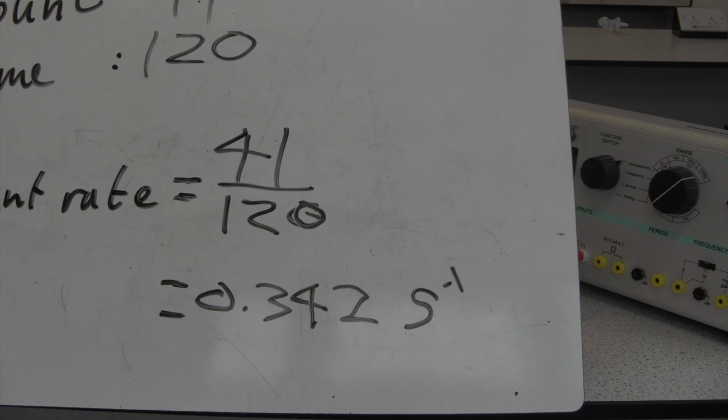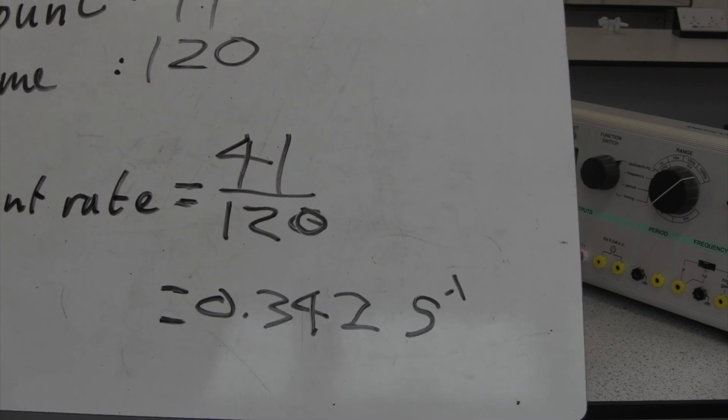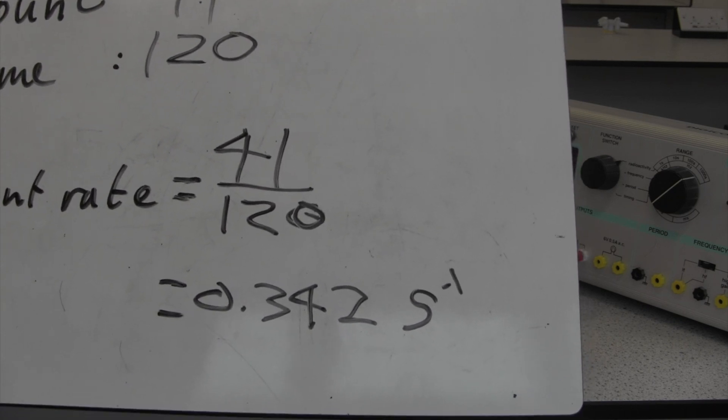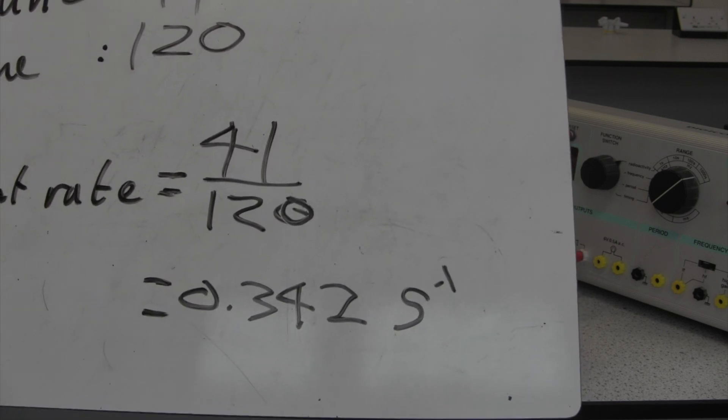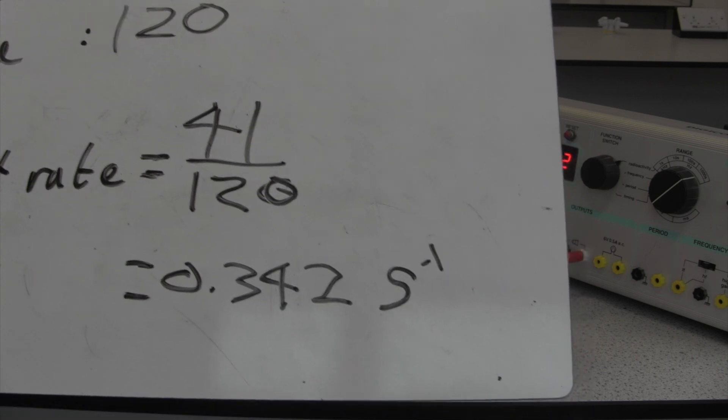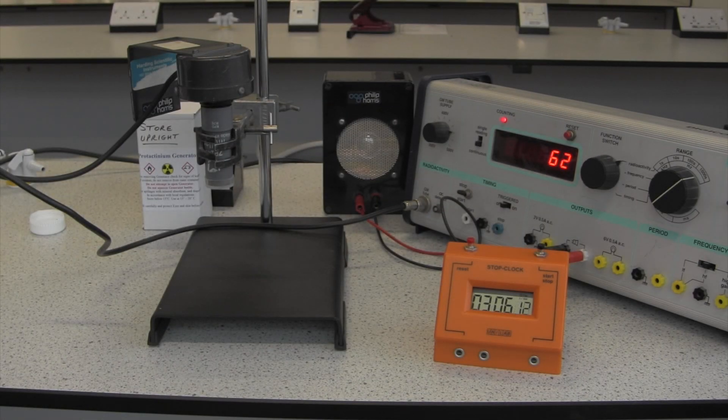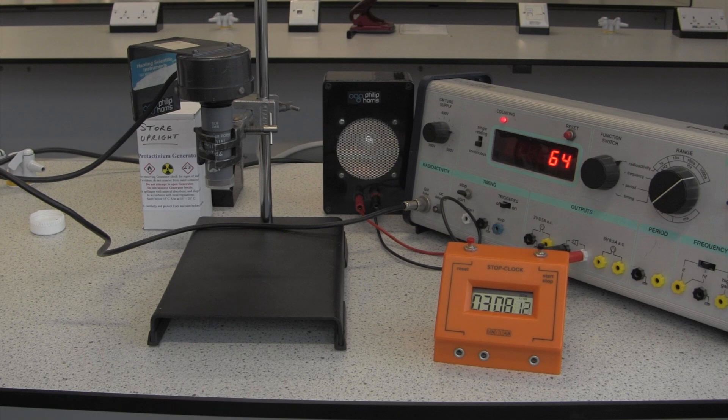What we're going to do now is we're going to get our protactinium generator working. And then we're going to measure how the activity changes over time. And then we're going to use that to measure the half-life.